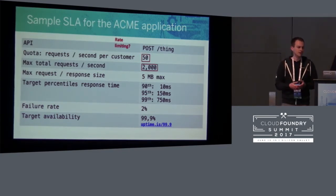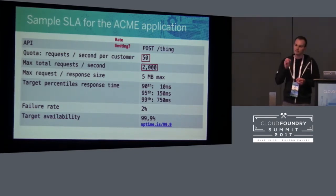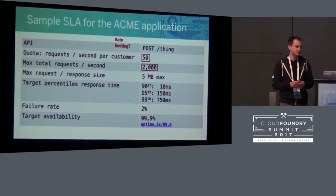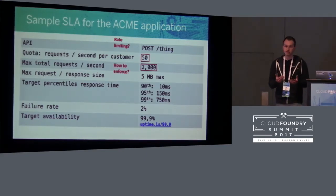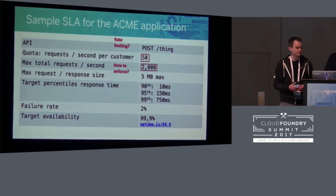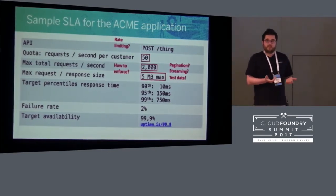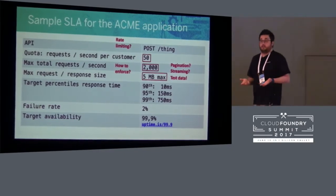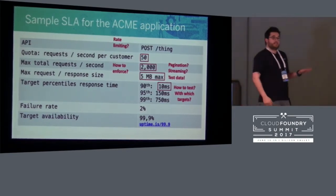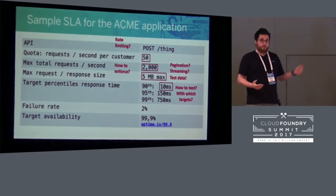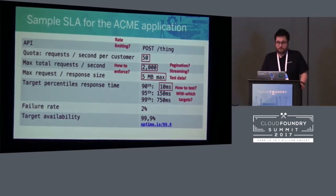What does an SLA really give us? If you look at quota per customer as well as max total requests per second, you eventually start thinking about topics like rate limiting, or how to enforce that in code. And if we start thinking about maximum data size per request, we start thinking about what data to use for testing. Then we wonder how fast it has to be, which gives us the targets for load test certification. And remember: under-promise and over-deliver — that's how you make customers happy.